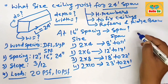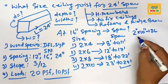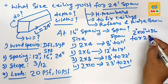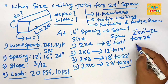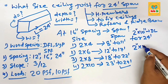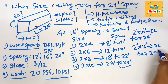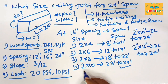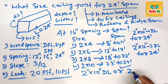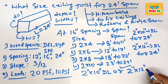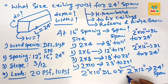For a 24-foot span, the acceptable size is 2-inch by 10-inch dimensional lumber as a ceiling joist from an engineering point of view. However, a builder would typically use a bigger size — 2-inch by 12-inch dimensional lumber — for greater stability. So you can use either 2x10 or 2x12 for your 24-foot span as a ceiling joist.